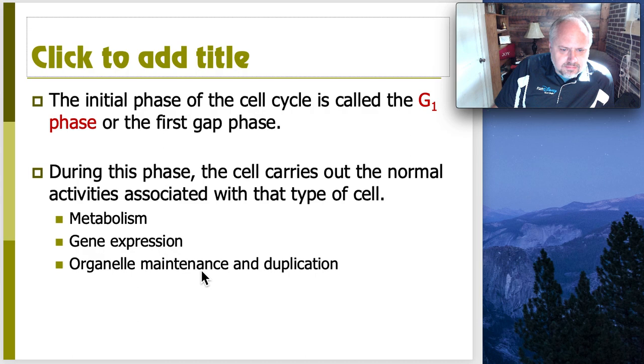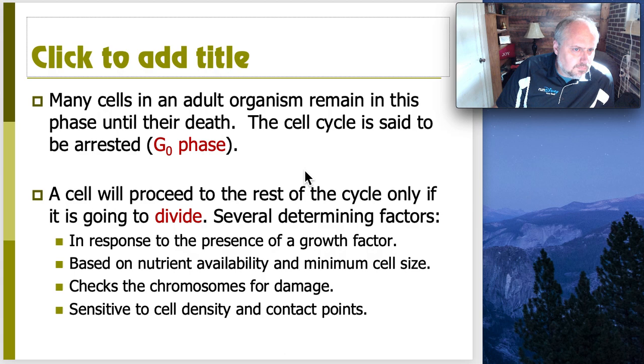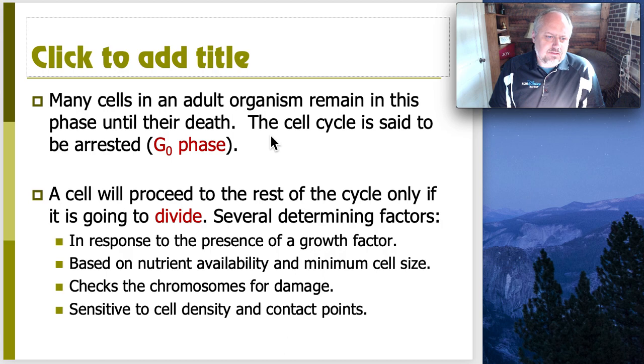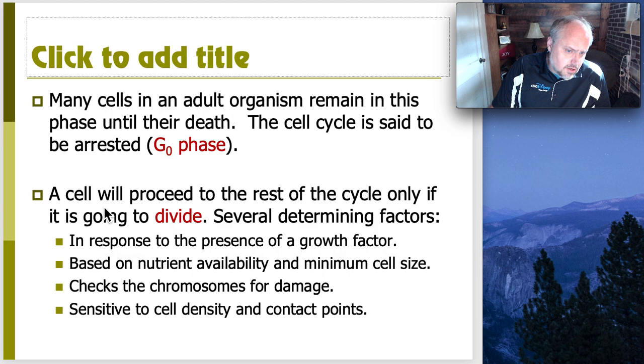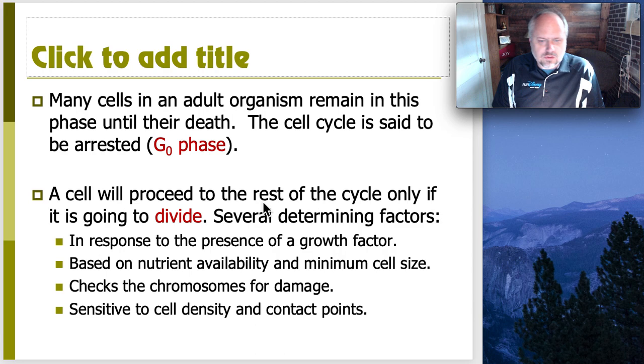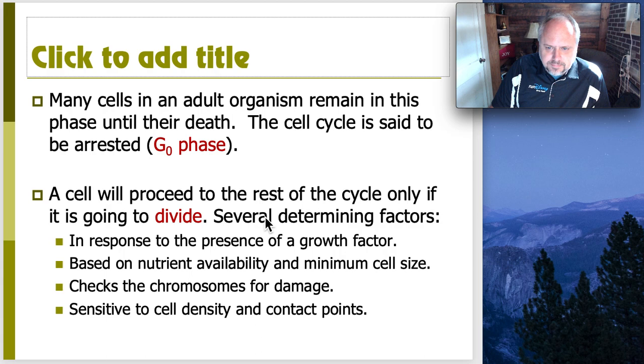So things like metabolism, gene expression, organelle maintenance, duplication, all that's going on here. A lot of the cells in our bodies actually are going to remain in this phase. This is what we call the G0 phase. And it means that they have essentially exited the cell cycle and will not divide unless they are told to do so. In fact, most cells are not going to divide abnormally anyway, or just randomly. There are several things that have to happen in order for a cell to divide.